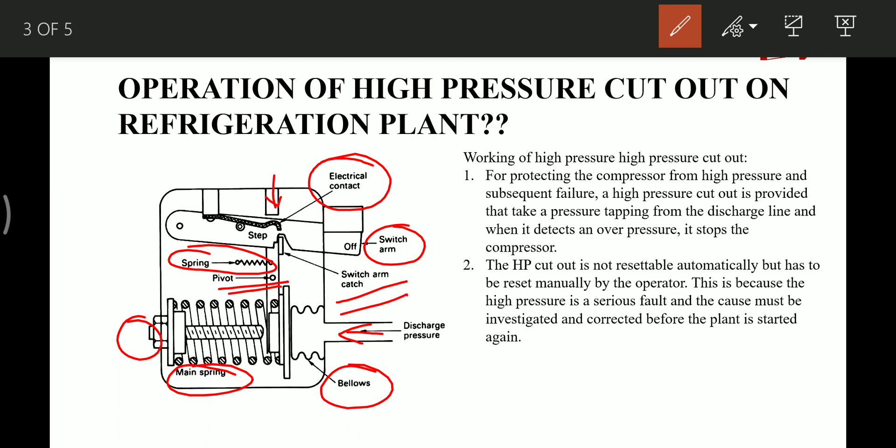For protecting the compressor from high pressure and subsequent failure, a high pressure cutout is provided that takes a pressure tapping from the discharge line. When it detects an overpressure, it stops the compressor. These high pressure cutouts are not resettable automatically but have to be reset manually by the operator. This is because high pressure is a serious fault and the cause must be investigated and corrected before the plant is started again.